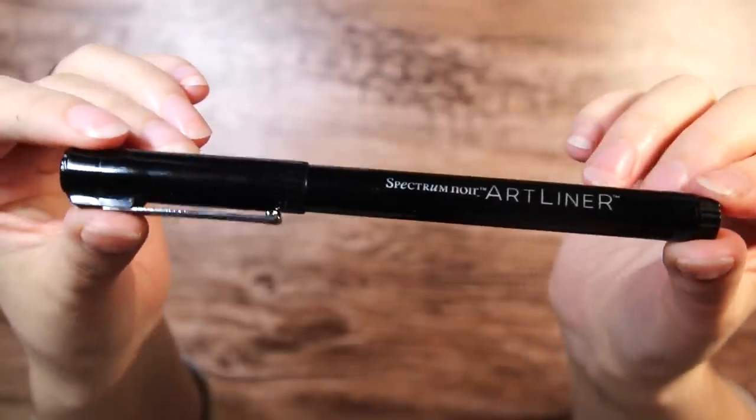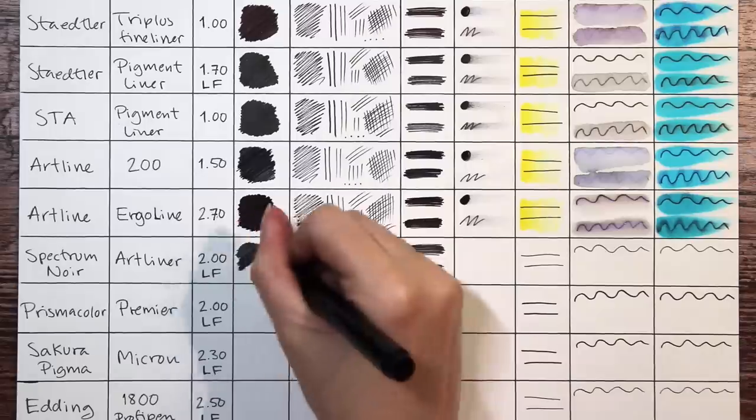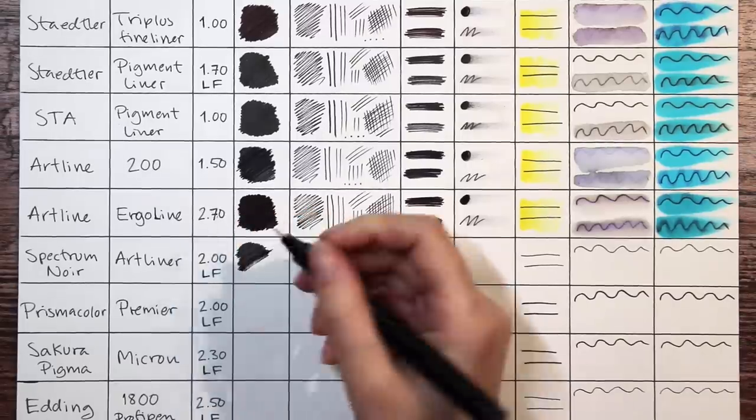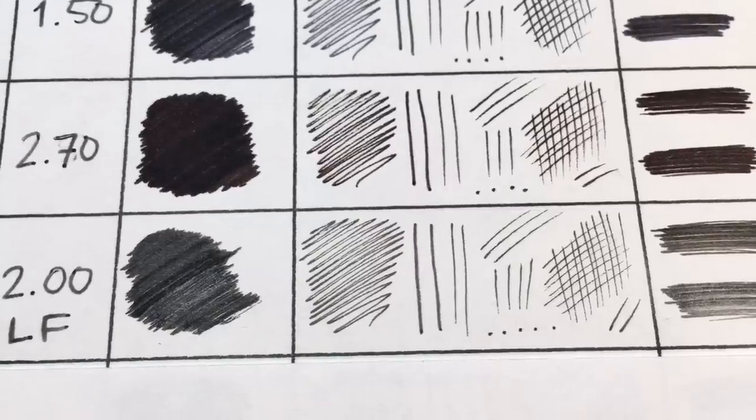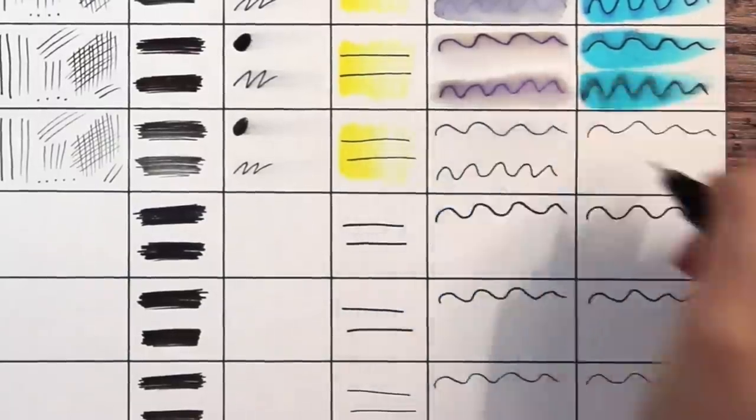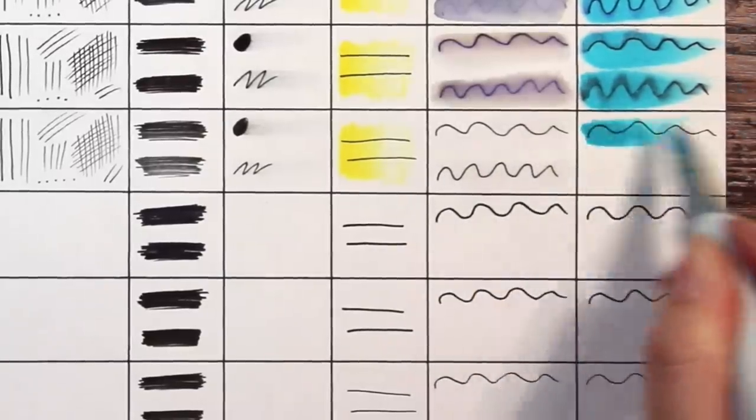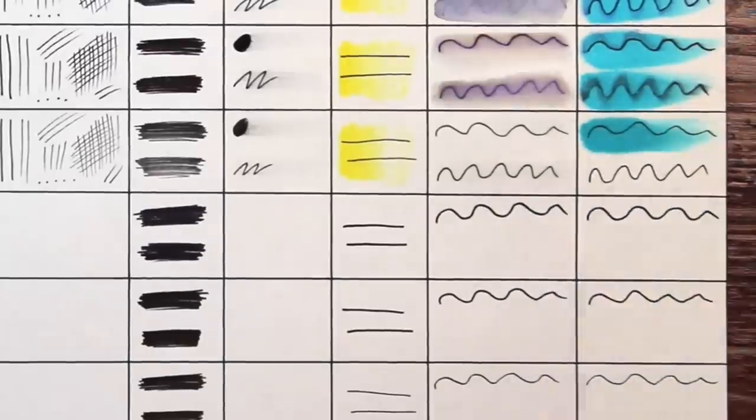Next is the Spectrum Noir Artliner for about $2 and this one is lightfast. It isn't super pigmented compared to the previous one but it is doing amazingly with both watercolors and markers. This is the first one that actually gets full score on both the premade line and the fresh line test.